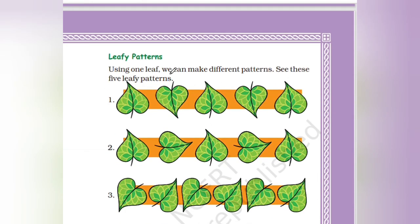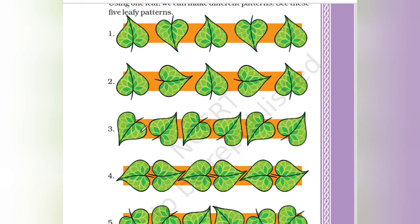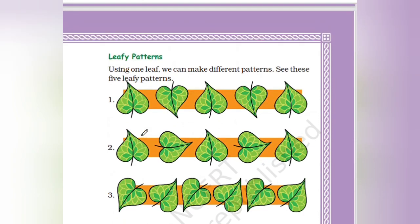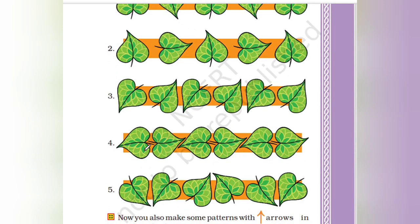Leafy patterns using one leaf, you can make different patterns. See these five leafy patterns. One inverted and the other one like that model it is given. One side and the other side, you can make different patterns. See the different patterns, two similar side and two different side.